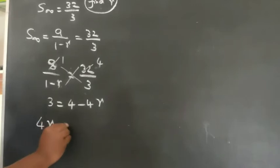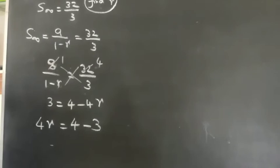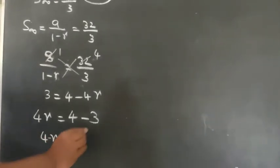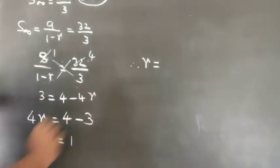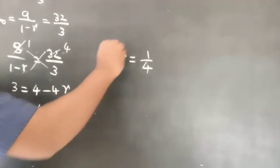Plus 4r equals 4 minus 3. 4r equals 1. Therefore r equals 1/4, r equals 1/4.